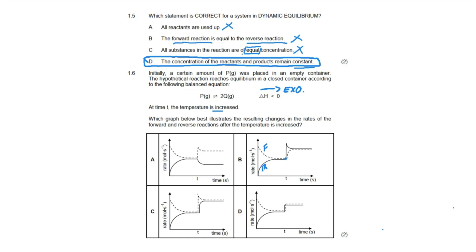When the temperature is increased, both rates initially increase. This means options B, C, and D are all correct in showing that both rates increase initially.